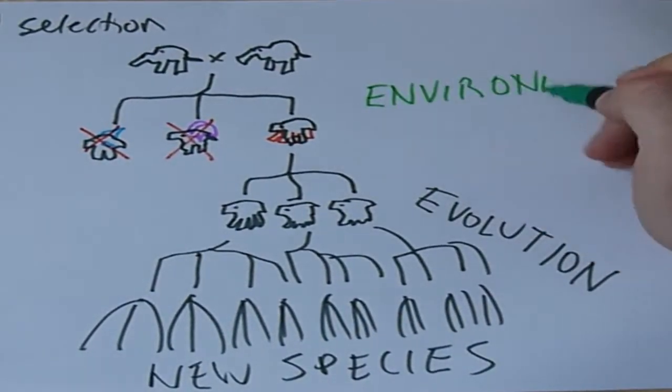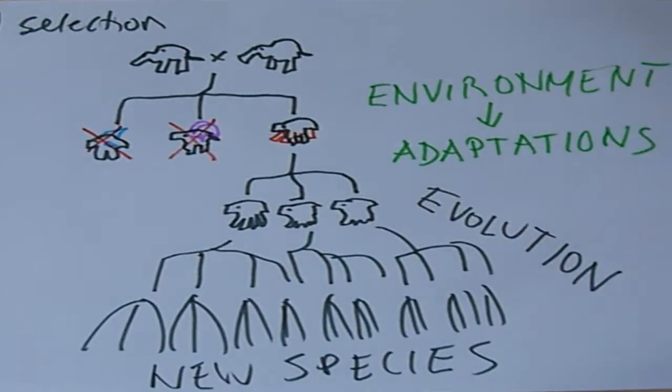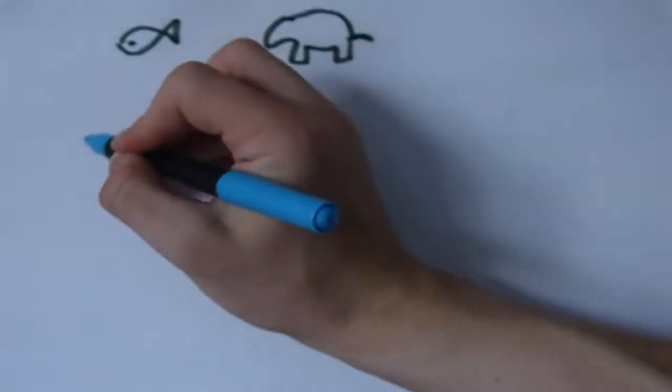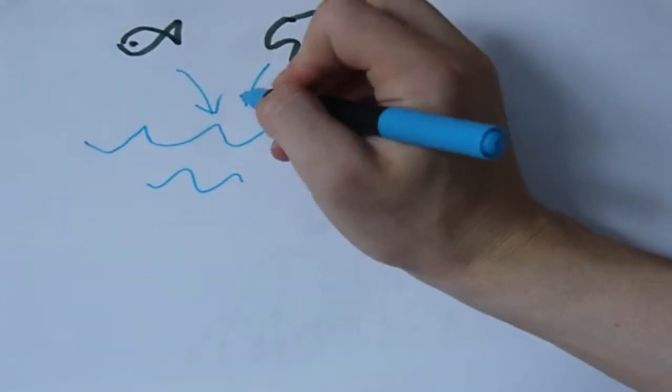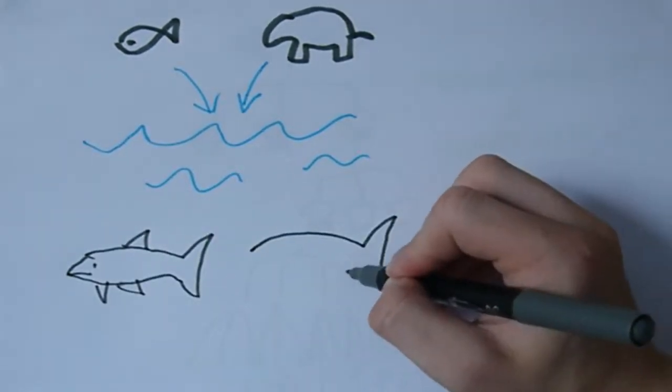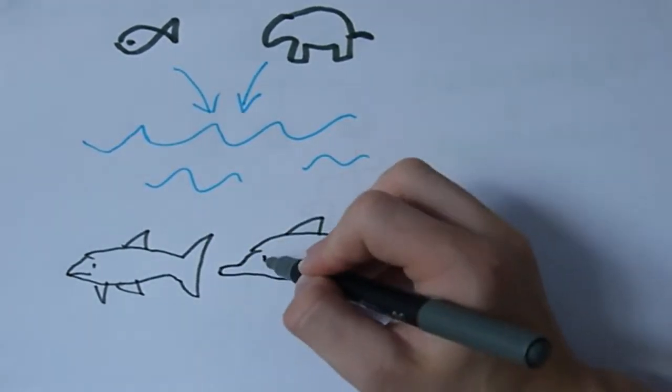Therefore, the environment of a group of creatures forces them to evolve particular adaptations. This means that if you take two completely unrelated animals and shove them into the same environment, after a few million years they'll start to look very similar. Their body designs will converge, so we call it convergent evolution.